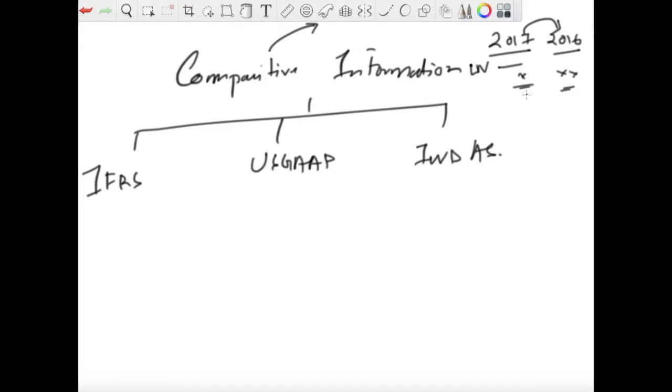So the main distinction lies in for how many periods the disclosure is required. For example, in case of IFRS, the minimum requirement is at least for one year, which means if my financial year is 2017, I need to disclose the corresponding figure for at least 2016 for both income statement and balance sheet and for the cash flow statement as well.